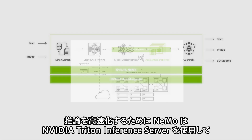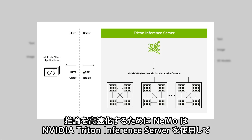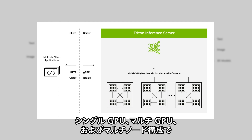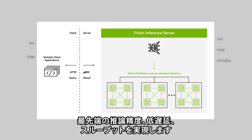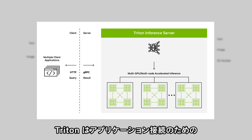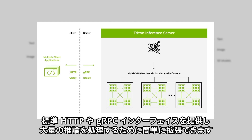For accelerated inference, NEMO uses NVIDIA Triton Inference Server to deliver state-of-the-art inference accuracy, latency, and throughput on single GPU, multi-GPU, and multi-node configurations. Triton offers a standard HTTP or gRPC interface to connect with applications, and can easily scale to handle large inference volumes.